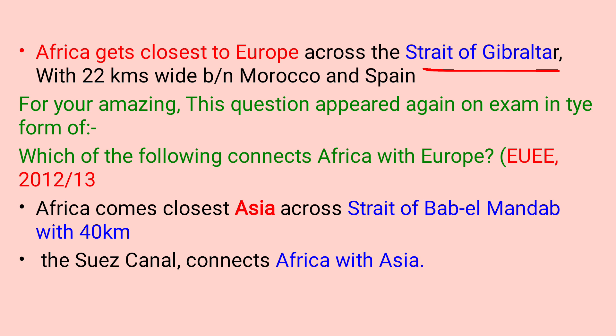This question also appeared in the Ethiopian University Entrance Exam of 2012 or 2013, asking which connects Africa with Europe. However, Africa comes closest to Asia across the Strait of Bab-el-Mandeb, which is 14 kilometers wide. So the answer is C — Asia.